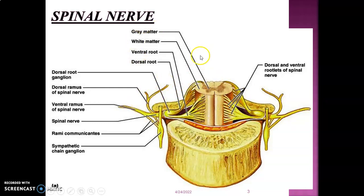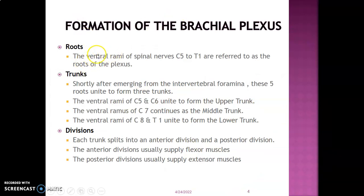The roots are either sensory or motor, and the spinal nerve divides into ventral and dorsal rami, which contain both motor and sensory fibers. The brachial plexus forms from the spinal nerves at the level of C5 to T1 — these are the roots. Shortly after emerging from the intervertebral foramina, these five roots unite to form three trunks: C5 and C6 form the upper trunk, C7 continues as the middle trunk, and C8 and T1 unite to form the lower trunk.